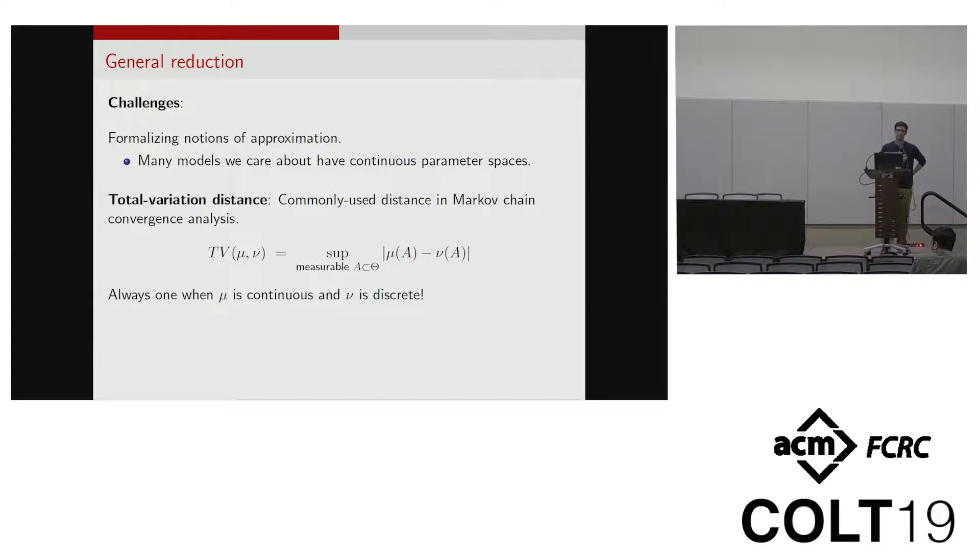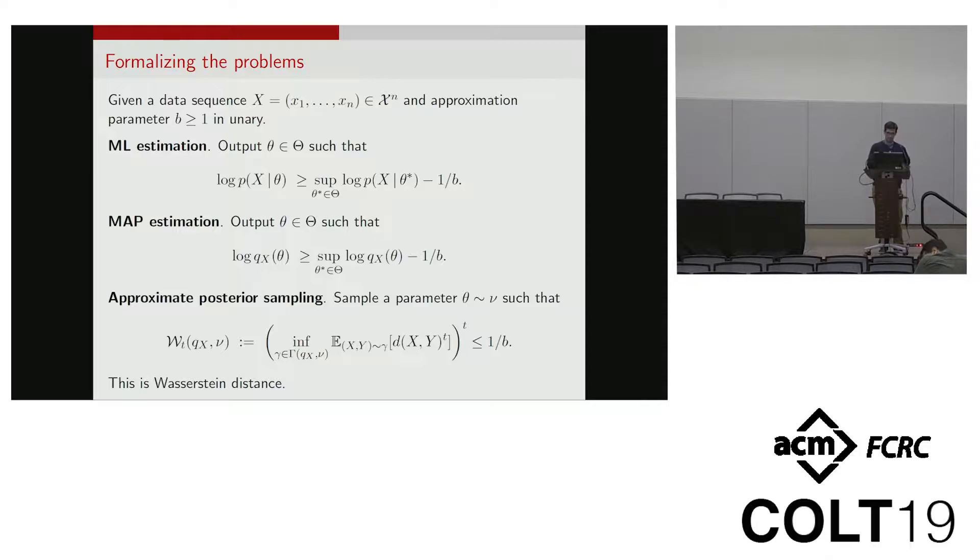The gold standard distance that you would care about is this total variation distance. This is the commonly used distance in Markov chain convergence analysis—the supremum over measurable sets of the disagreement between two distributions. You can see it's not too hard to see that this is always one when one is continuous and the other is discrete, so obviously we can't do total variation distance. It turns out that for sampling in particular, there's a very nice notion of approximation that's kind of in vogue in machine learning right now, which is this Wasserstein distance. It turns out to be a really great way of relating discrete and continuous distributions.